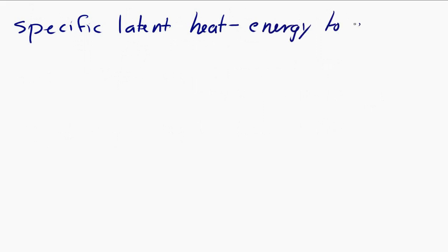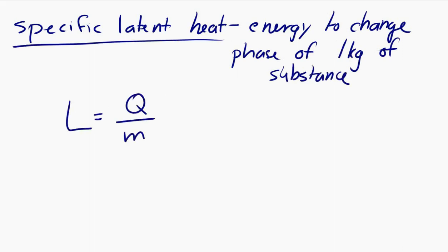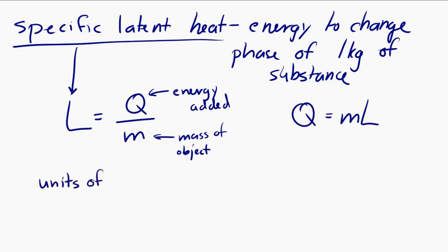The equation for specific latent heat is L = Q/M, where capital L is the specific latent heat, Q is the energy being added, and M is the mass of the object. We can rearrange this to get Q = ML. From the first equation, we can determine the units of specific latent heat: energy divided by mass, or joules per kilogram.